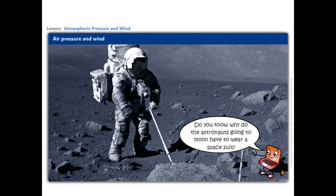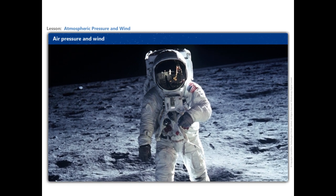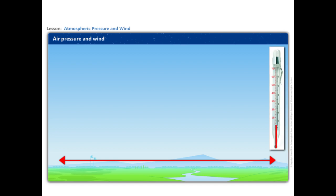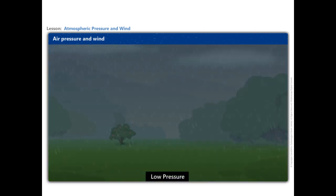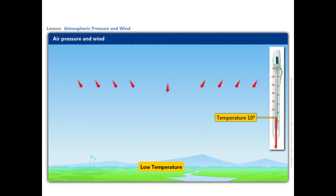Do you know why astronauts going to the moon have to wear a special suit? On the moon, there is no air and hence no air pressure. Thus, the astronauts have to wear special protective space suits filled with air. Horizontally, the distribution of air pressure is influenced by the temperature of air at a given place. In areas where temperature is high, the air gets heated and rises, creating a low pressure area. Low pressure is associated with cloudy skies and wet weather. In areas having low temperature, the air is cold and heavy, so it sinks and creates a high pressure area.